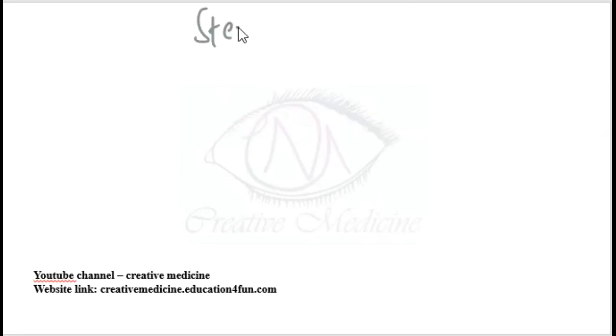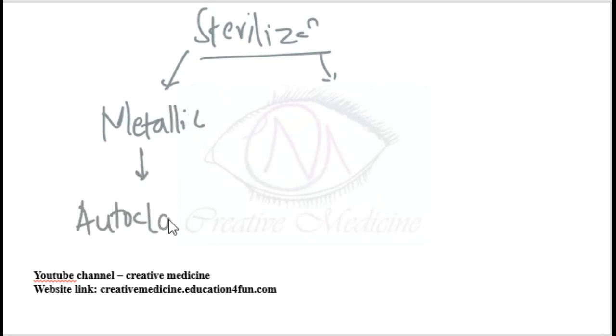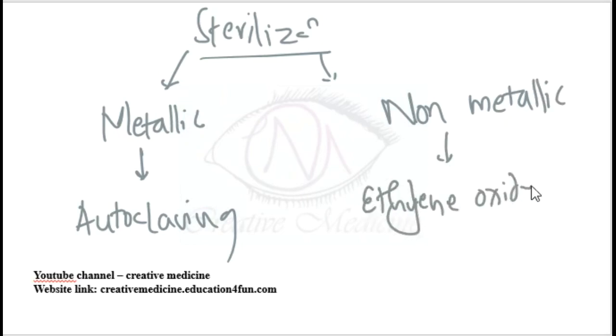Sterilization methods differ based on materials. All metallic materials used in intubation are sterilized using autoclave. Non-metallic materials are sterilized using ethylene oxide, except the silicon laryngeal mask airway, which is sterilized using autoclave.